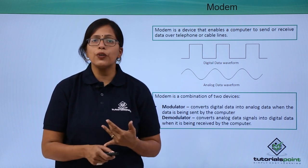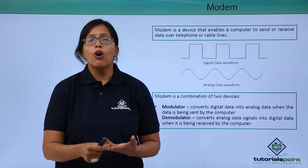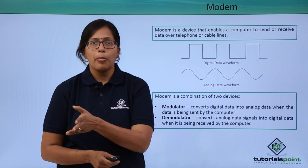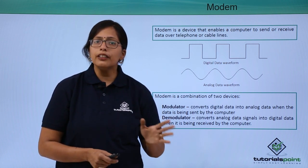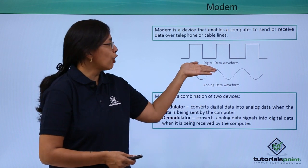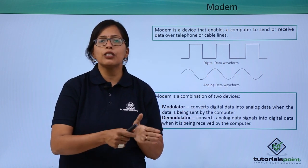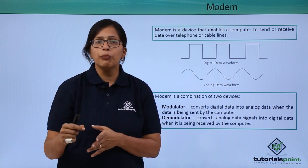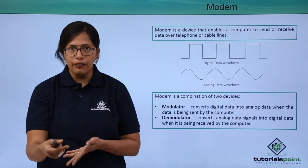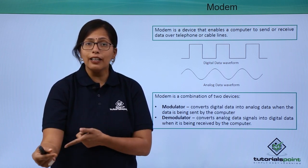As discussed in previous videos, data travels over copper wires, optical wires, or even unguided media in the form of analog data. However, within the computer, data transmission takes place in the form of digital data. When the computer needs to transmit data over the network, it sends data as digital waves, but it has to be transmitted as analog waves.